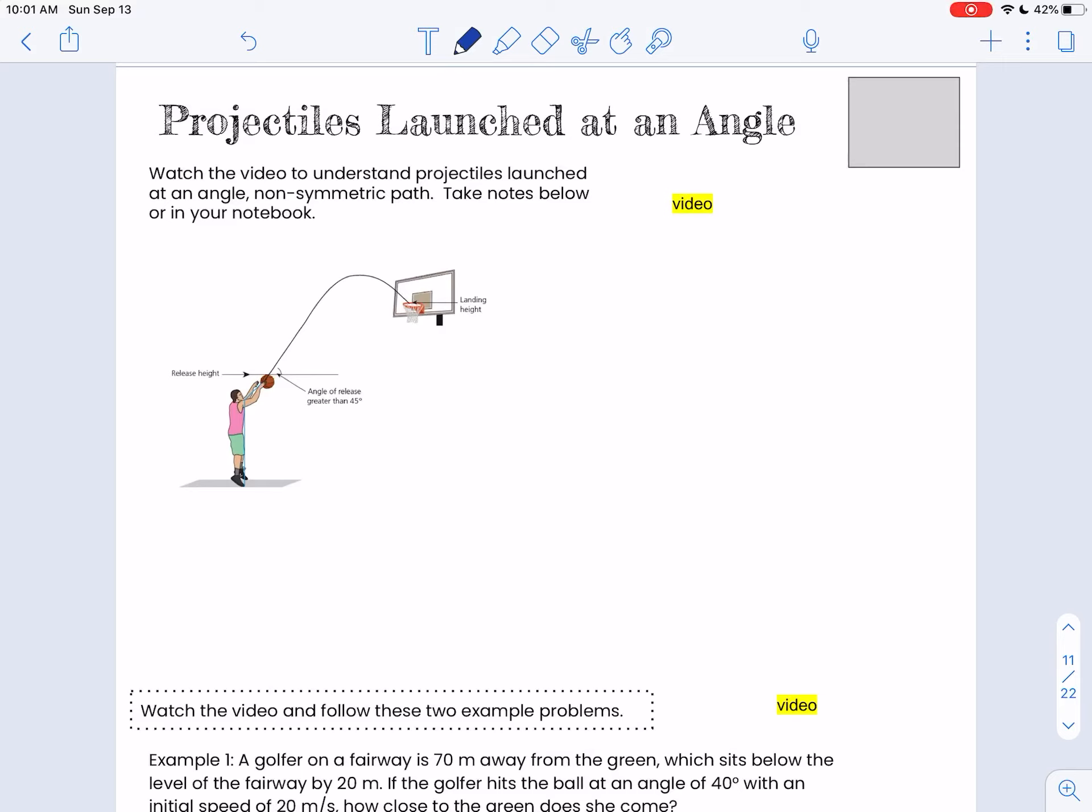All right, the hardest kind of projectiles launch at an angle are the ones where it starts and ends at a different place.